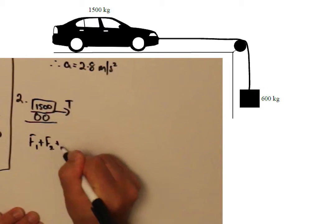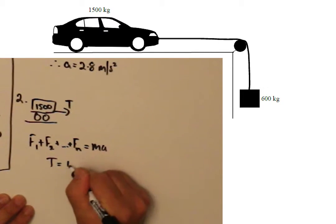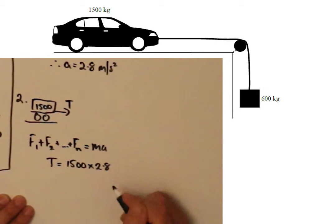Solving for the tension in the rope, we can isolate the car and say T equals 1500 times 2.8, which gives us a tension force of 4,200N.